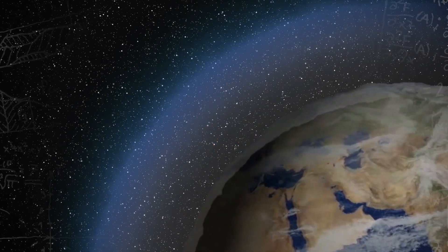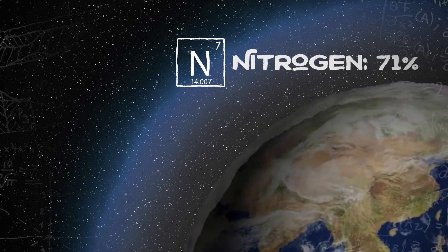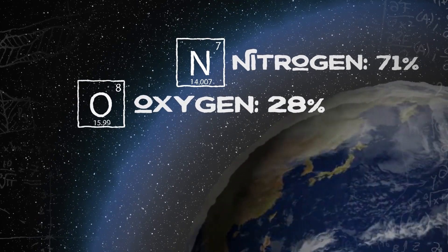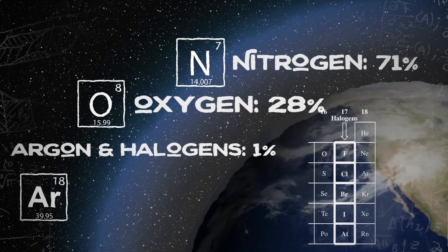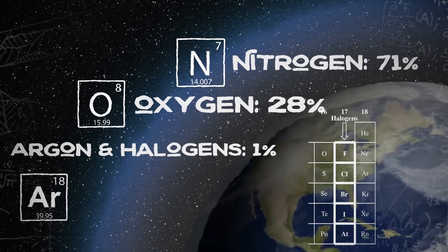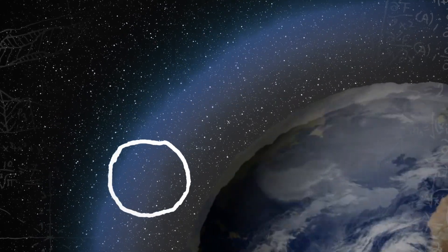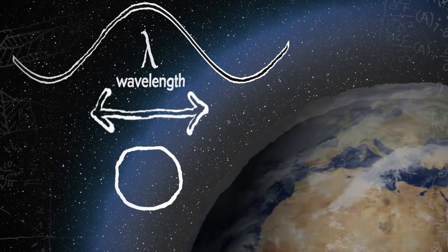Our atmosphere is composed of about 71% nitrogen and 28% oxygen molecules, while the remaining 1% includes gases like argon and halogen. These molecules are super abundant in our atmosphere and are so small that they are even smaller than the wavelength of visible light.